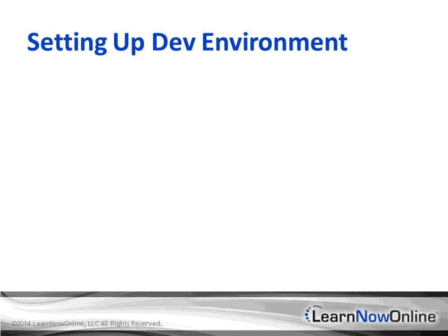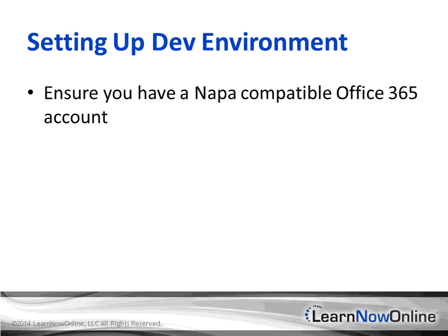Let's take a look at the dev environment itself. You want to make sure that you've got a Napa-compatible Office 365 account. If you have an MSDN account, that comes with an Office 365 account for development. If you have an E1 or E3 license for Office 365, you're compatible with Napa. Check with your licensing specialist for details on that, as things can get a little subtle with Microsoft licensing.